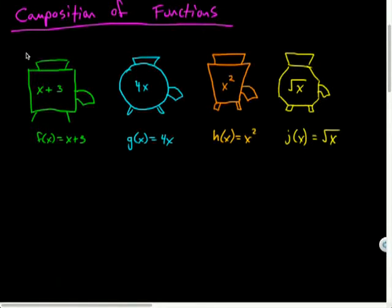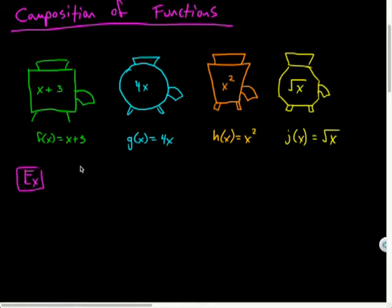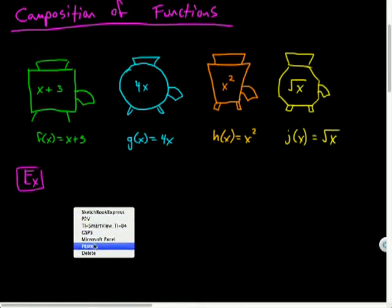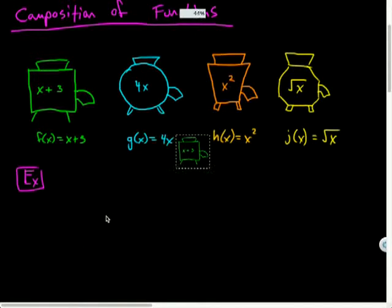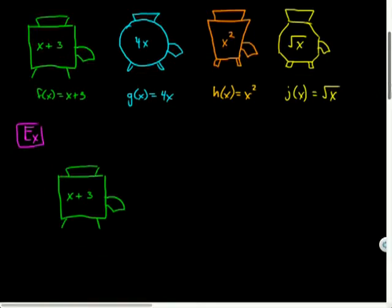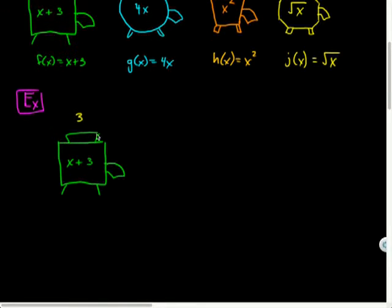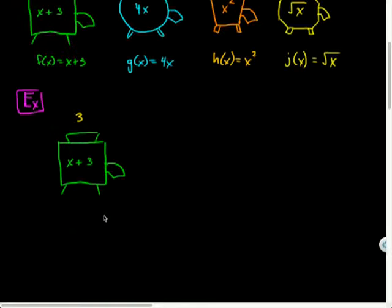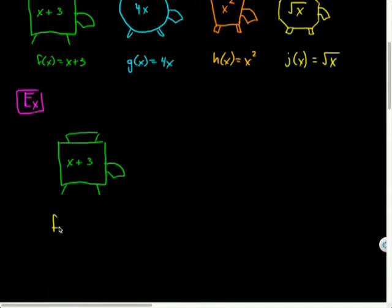So suppose we work at some factory with all these machines, and we're interested in what sorts of things we can put into them and what comes out. Let's do some practice with the plus 3 machine, f of x. If I plug in 3, what do I get? 3 goes into the machine, and 6 pops out — it just added 3. So f of 3 equals 3 plus 3, or 6.